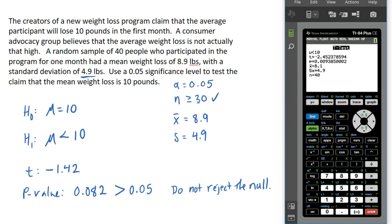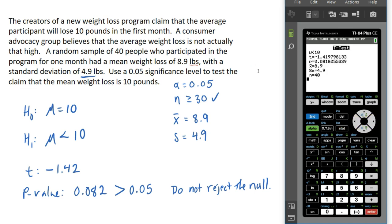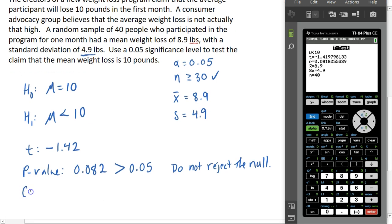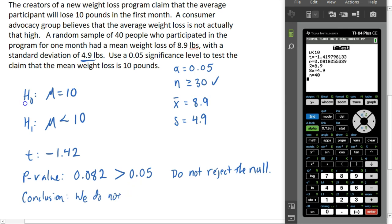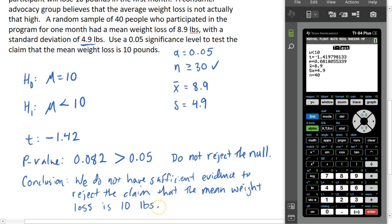So there are two factors at play here. One factor is how different from the null hypothesis our sample data is. The second is how spread out the data is — how big is the standard deviation? In our case, with the mean weight loss of 8.9, we are not going to reject the null. Our conclusion: we do not have sufficient evidence to reject the claim that the average participant will lose 10 pounds. Or, another way to put it: we do have sufficient evidence to support the claim that the mean weight loss is 10 pounds.